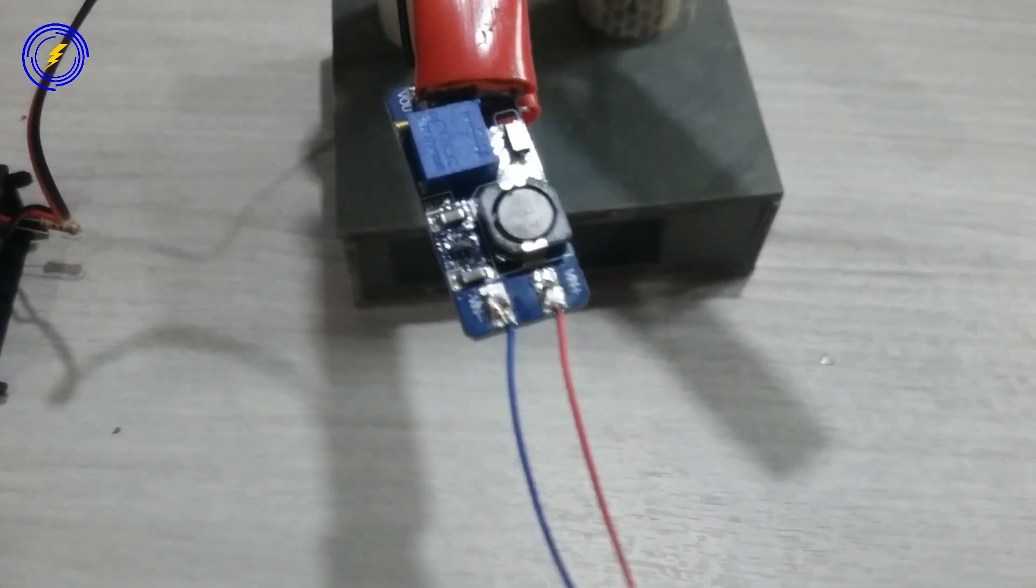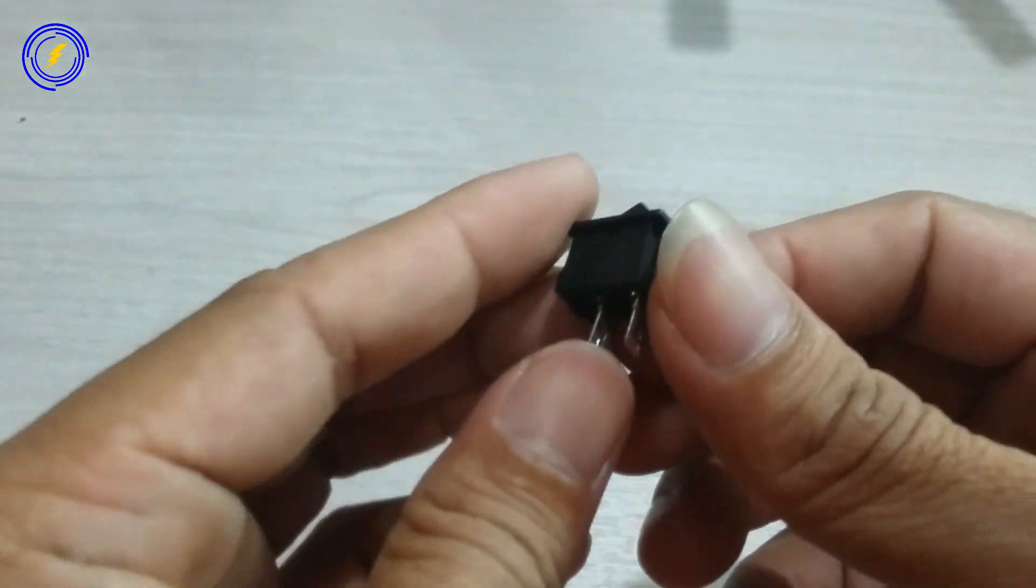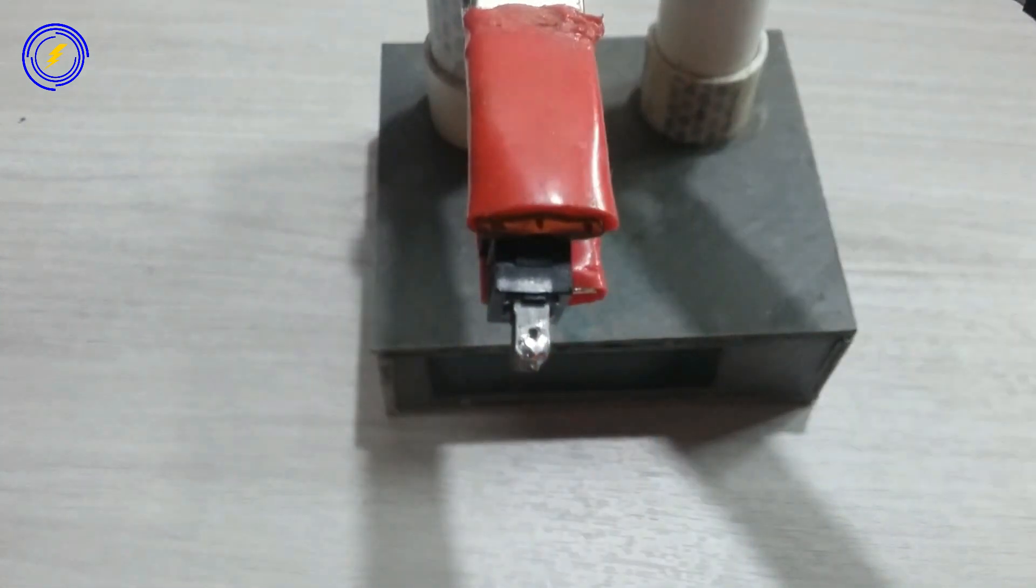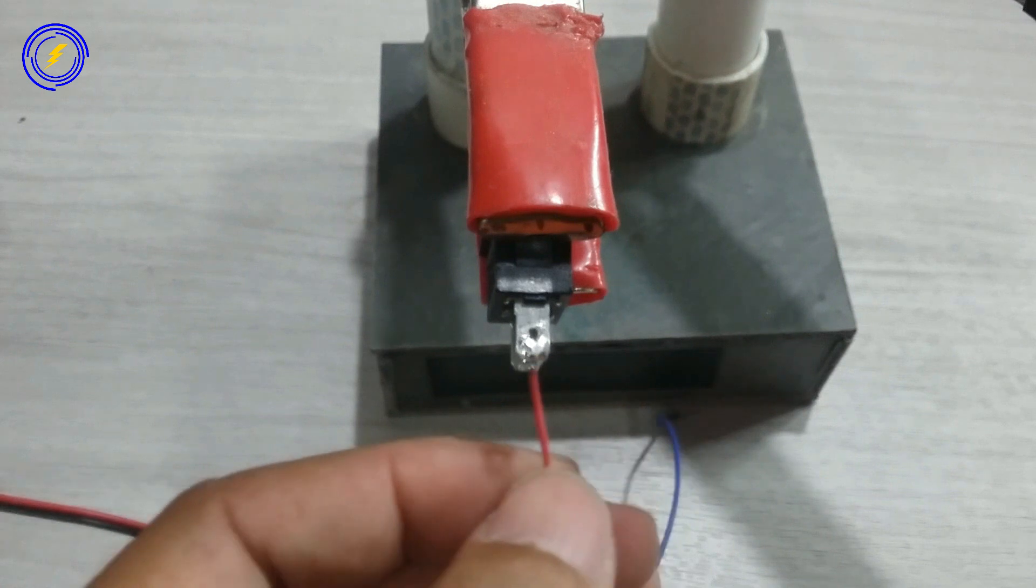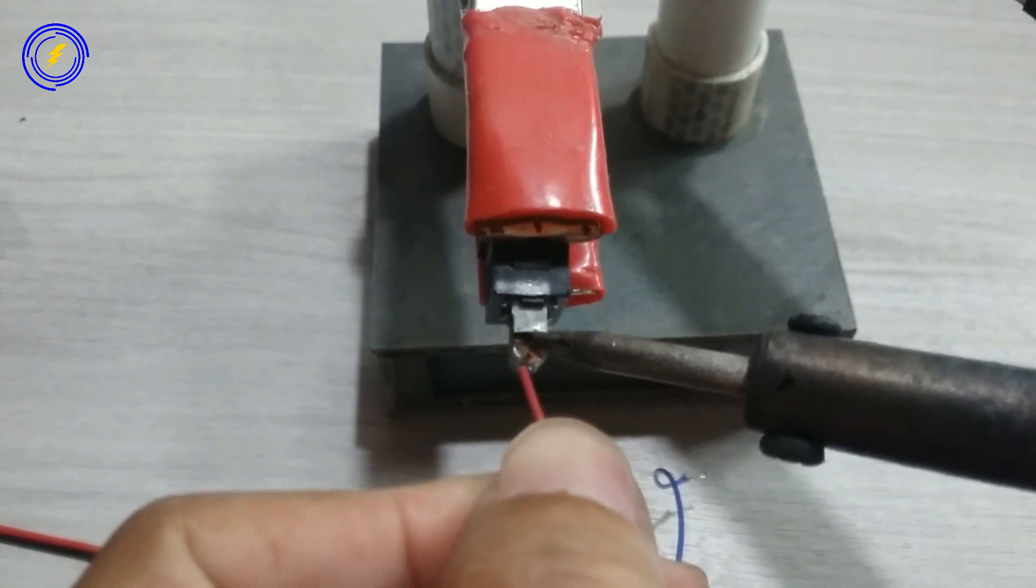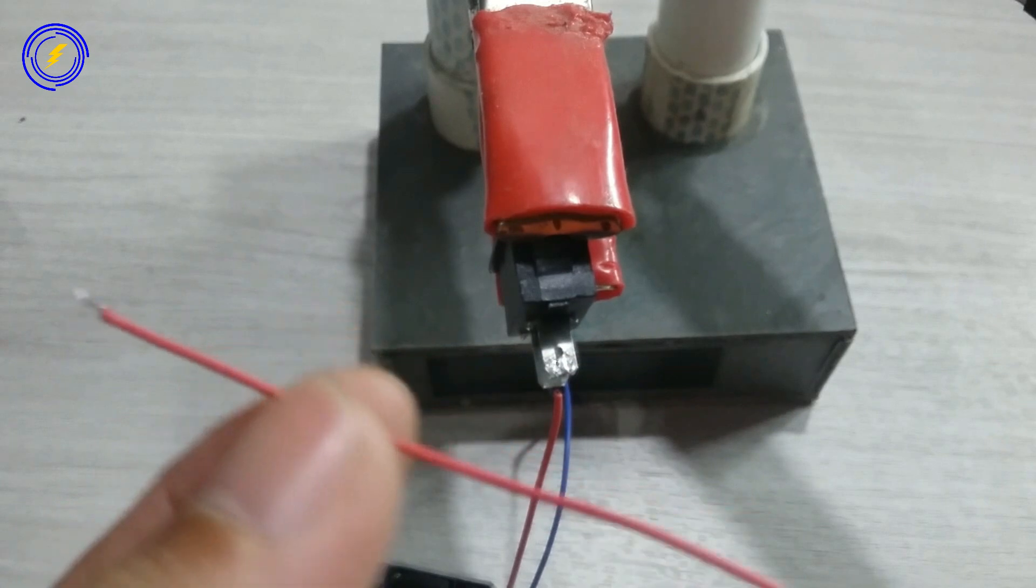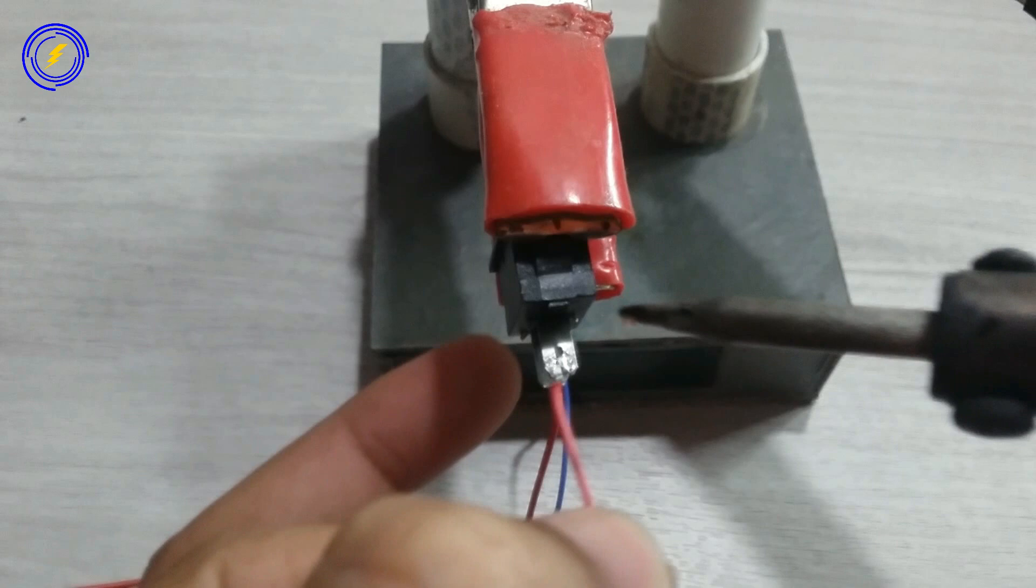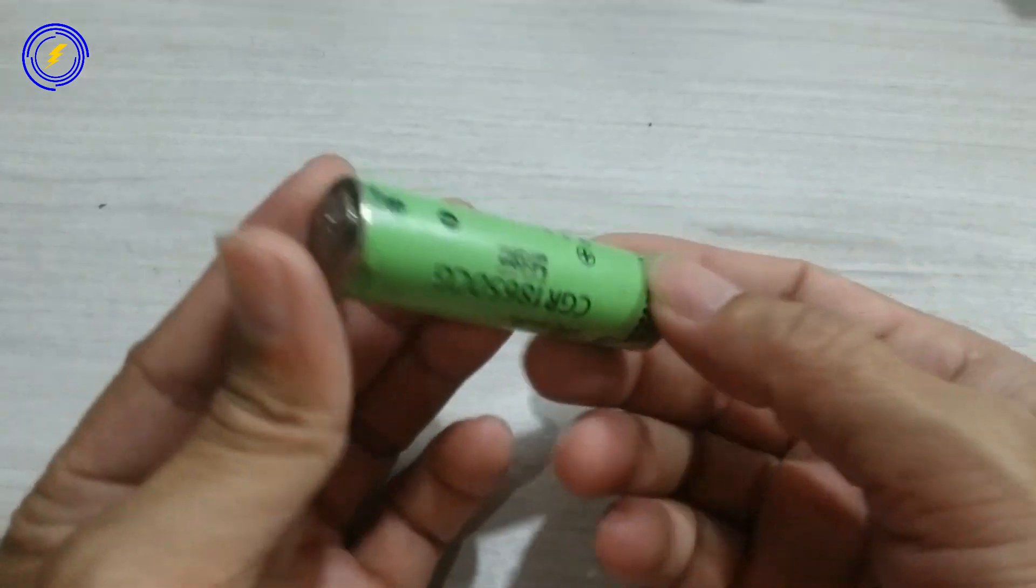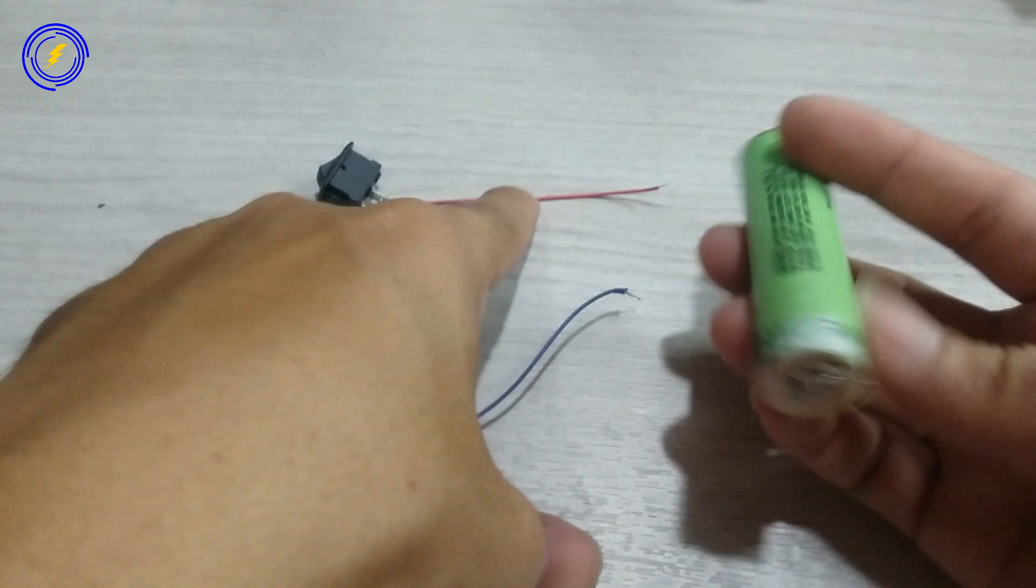Seperti ini teman-teman. Saya sudah menyiapkan sebuah saklar on-off. Kita akan solder dulu hubungkan dengan kabel. Saya sudah menyiapkan lagi sebuah baterai 3,7V, baterai bekas laptop. Ini untuk MIN Plus-nya kita sesuaikan.